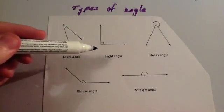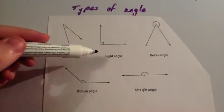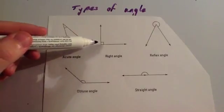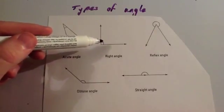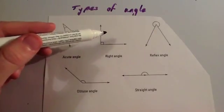An angle of exactly 90 degrees is called a right angle. A right angle will always have this little square box beside it, and that means it's 90 degrees.